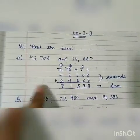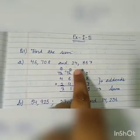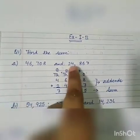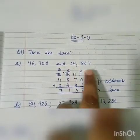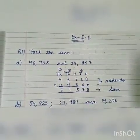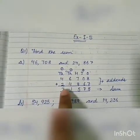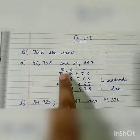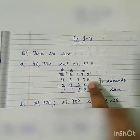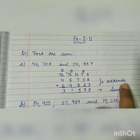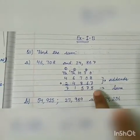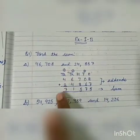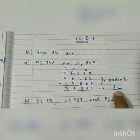Look at question number 1. Here we have two numbers: 46,708 and 24,867. The numbers that are added are called addends. The result obtained on addition is called sum. That means you add two numbers and the answer is the sum.